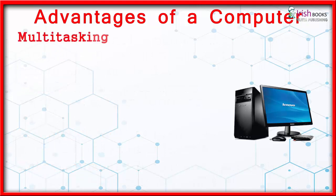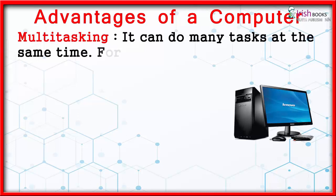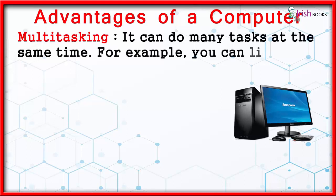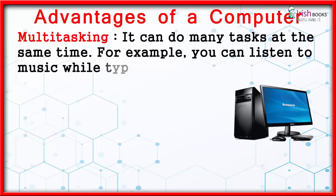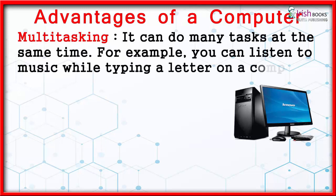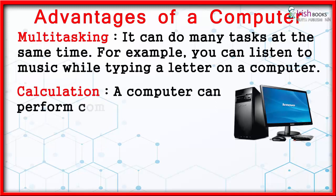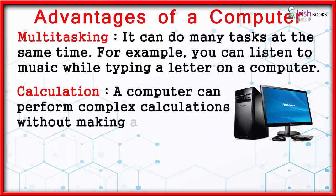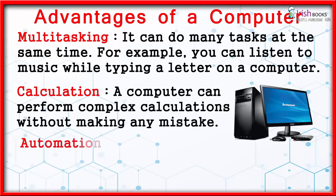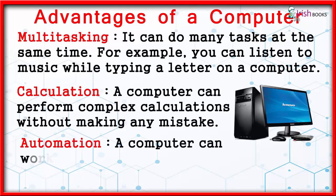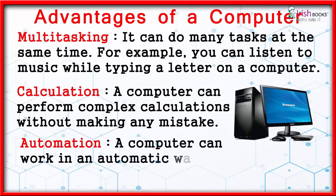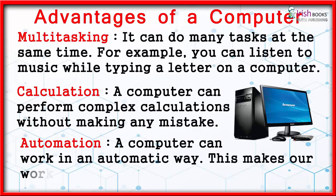Multitasking: a computer can do many tasks at the same time — for example, you can listen to music while typing a letter on a computer. Calculation: a computer can perform complex calculations without making any mistake. Automation: a computer can work in an automatic way, which makes our work less prone to error.